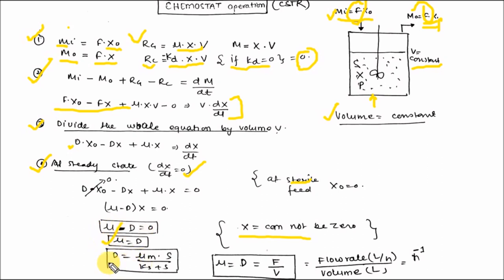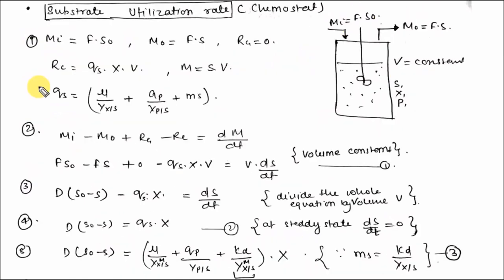From Monod kinetics, μ equals μ_M times S divided by (K_S plus S). The dilution rate D equals flow rate divided by volume. Therefore at steady state, μ equals D, which is the key relationship for biomass production in the chemostat.